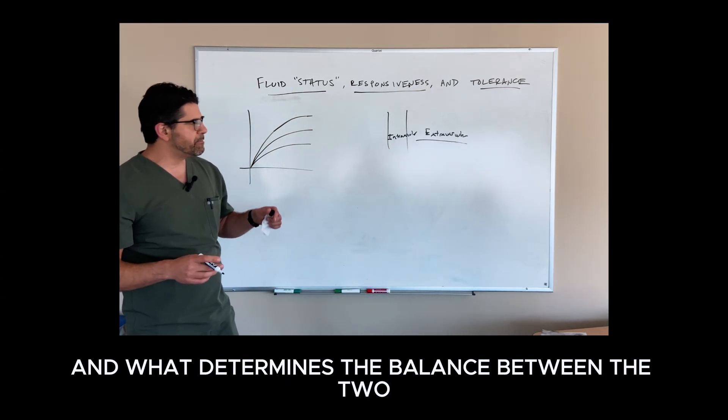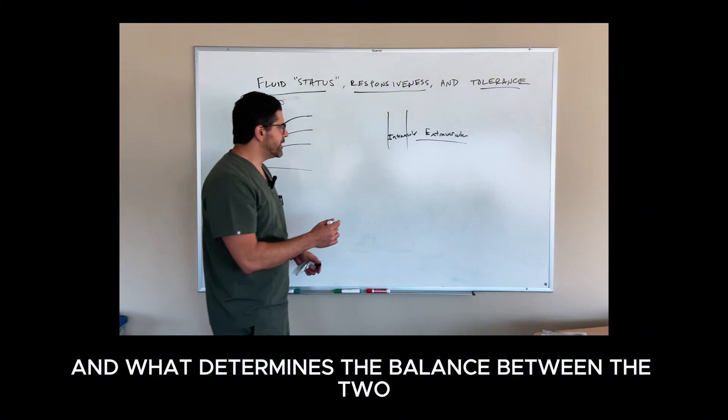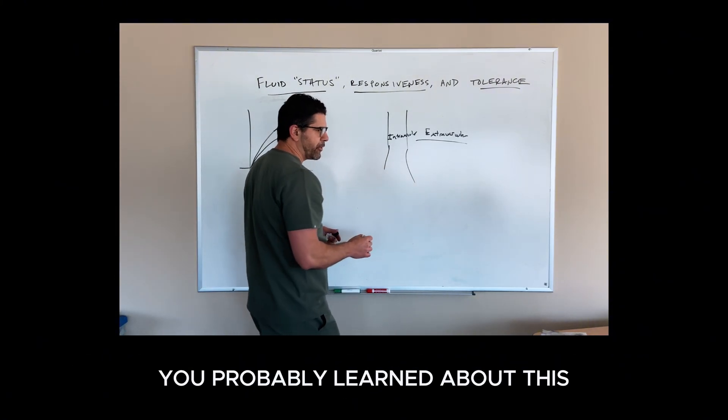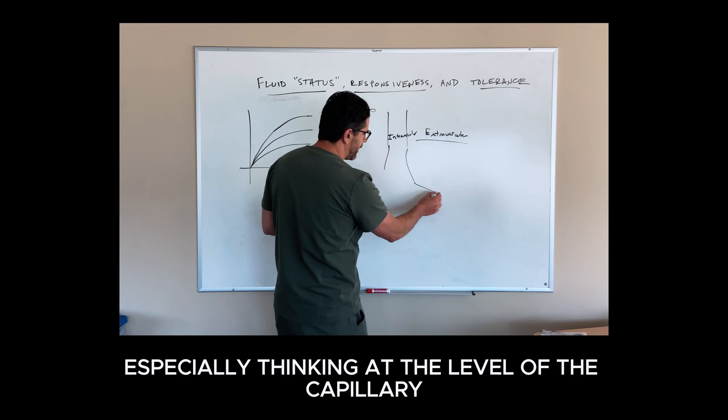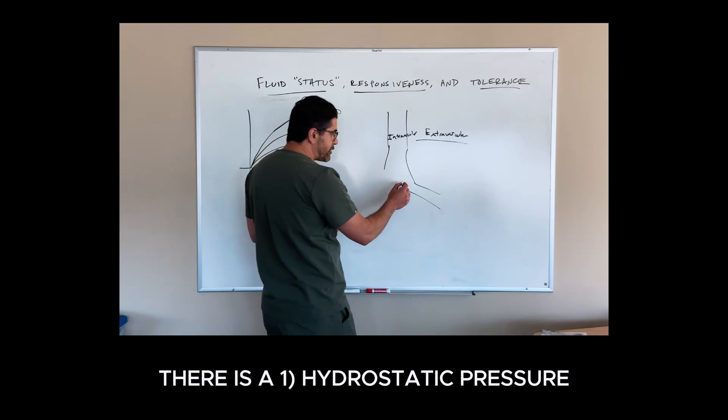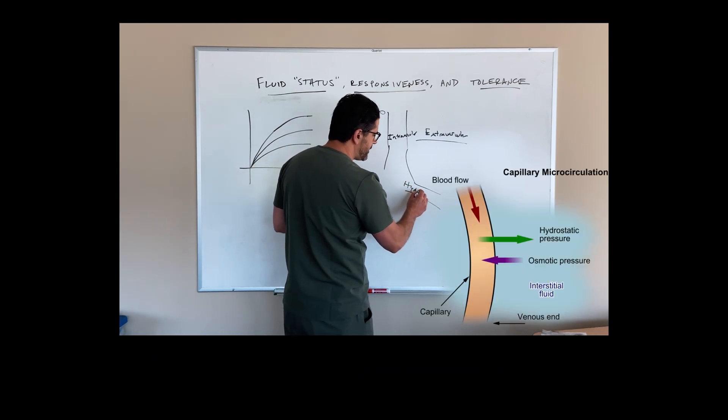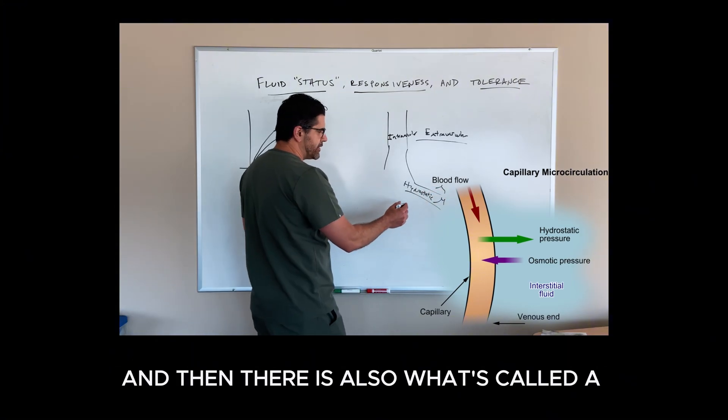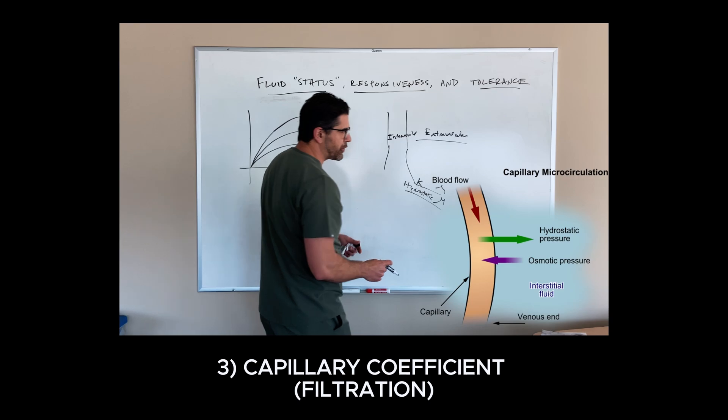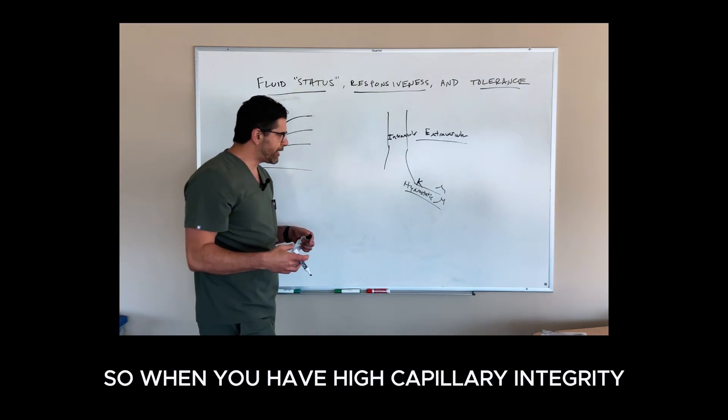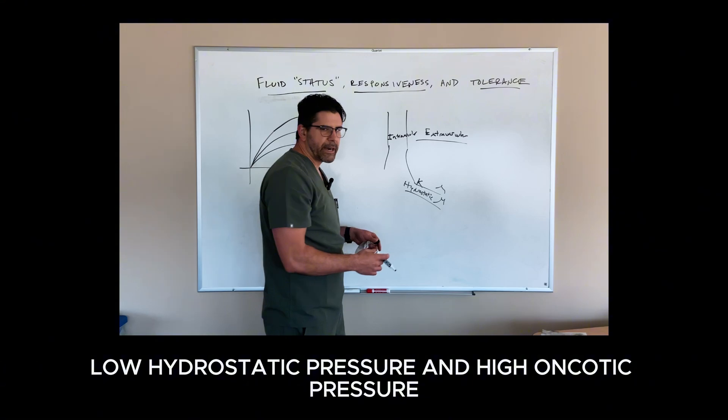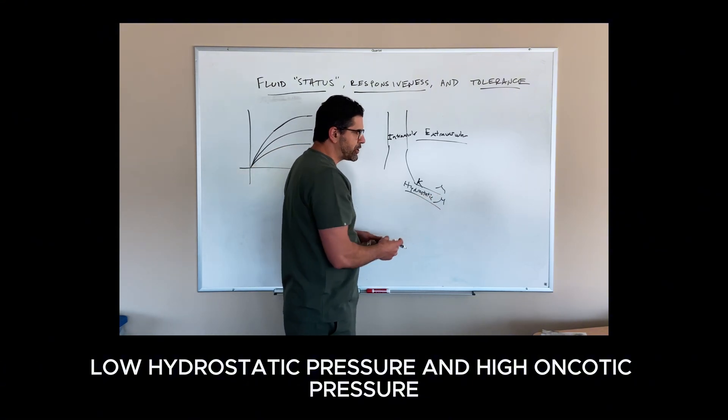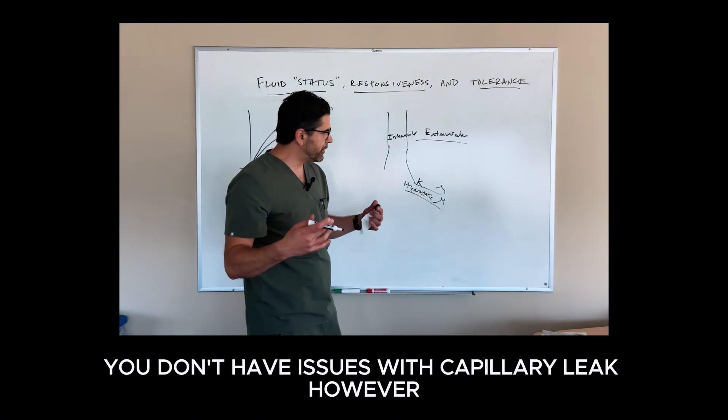What determines the balance between the two are three factors, especially at the level of the capillary. There is hydrostatic pressure, a difference in oncotic pressures, and a capillary coefficient or the filtration. When you have high capillary integrity, low hydrostatic pressure, and high oncotic pressure, you don't have issues with capillary leak.